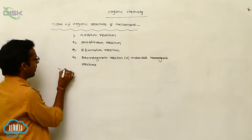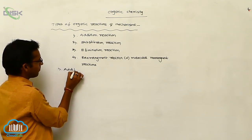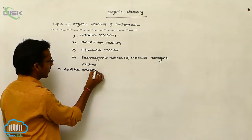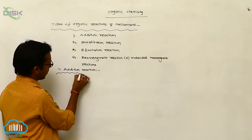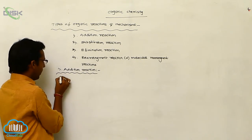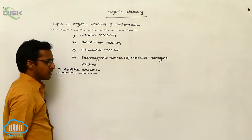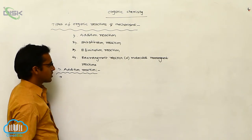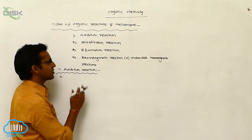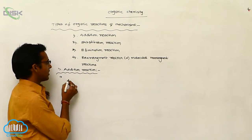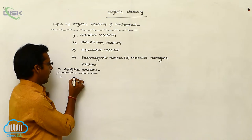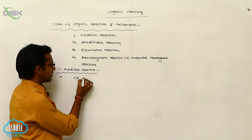The first type is addition reaction. Addition reaction means the addition of one or more atoms or groups to a molecule. The addition product is formed, especially for double bonds and triple bonds.